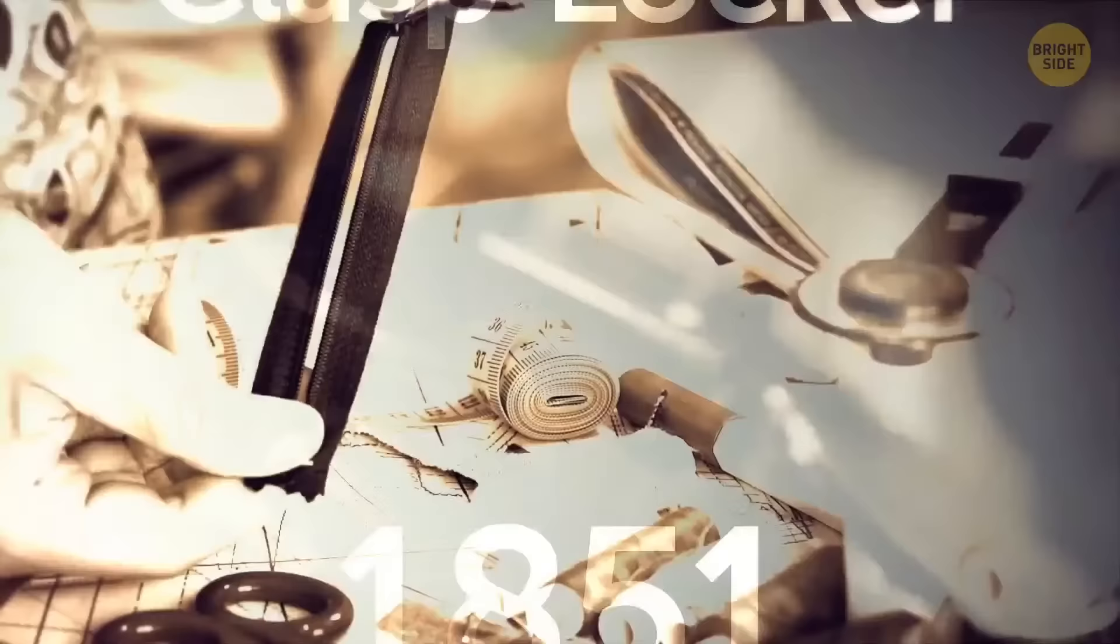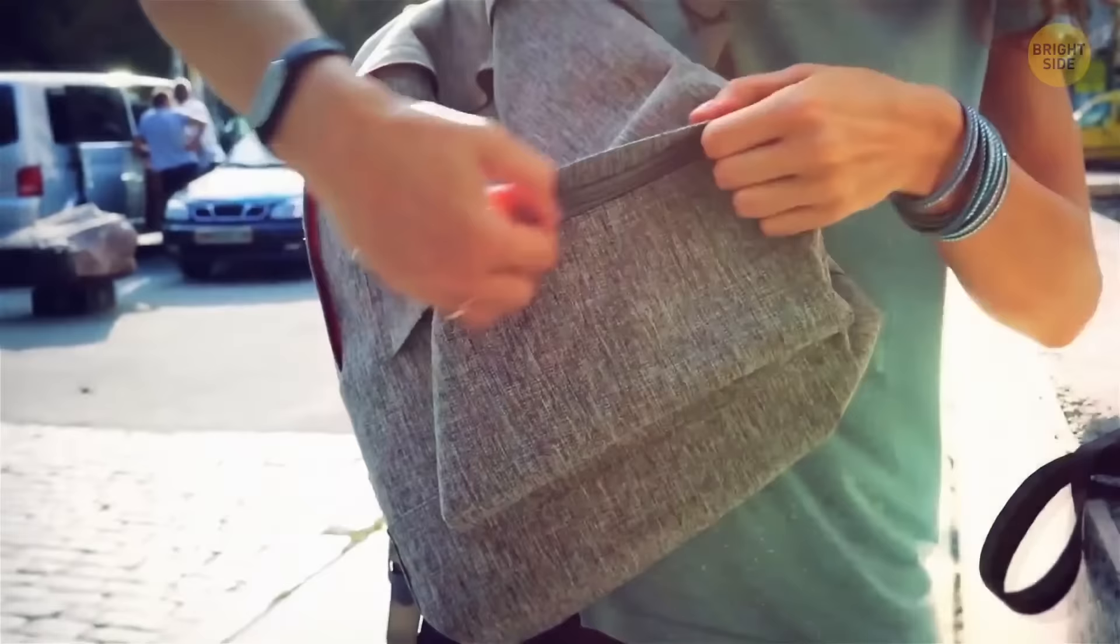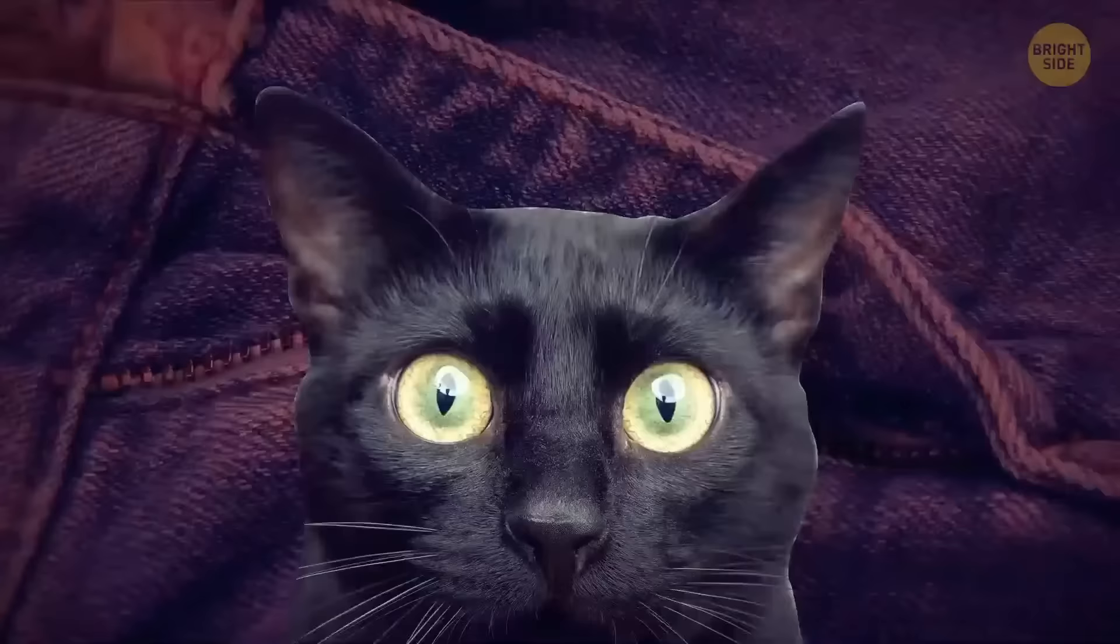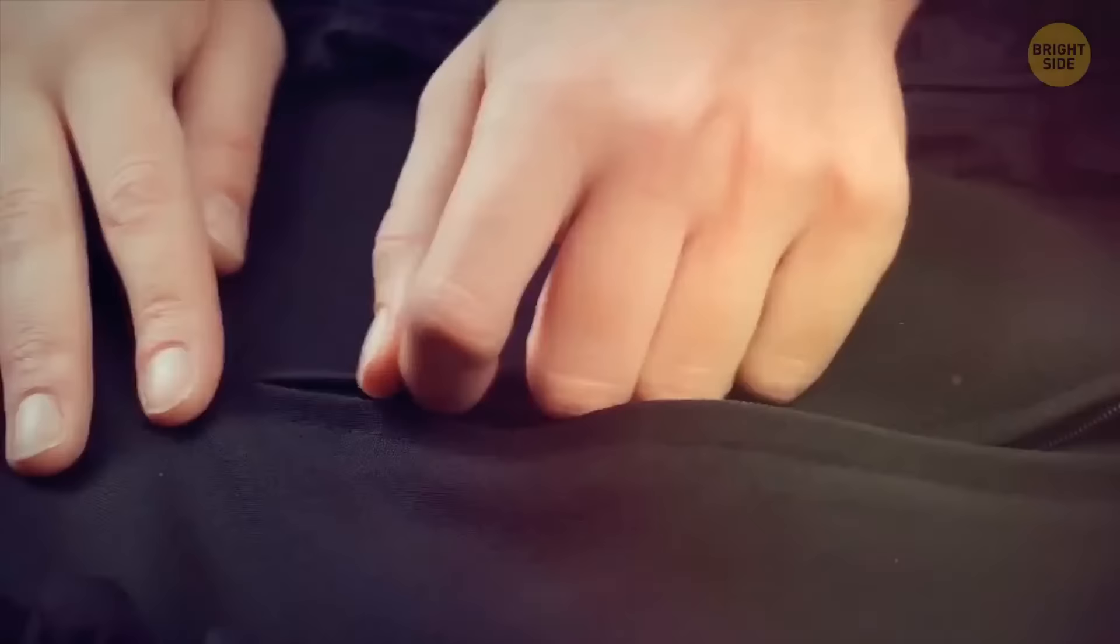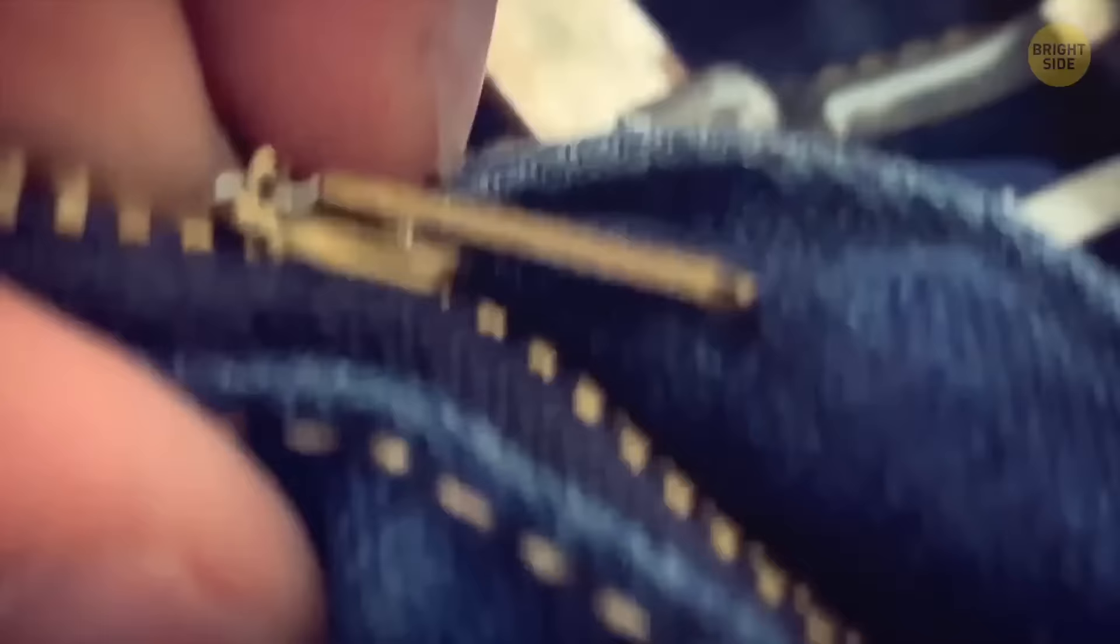When you do finally stumble out of bed, make sure you're using this next item correctly to avoid a potentially upsetting situation. The zipper, originally patented as the clasp locker in 1851, didn't become widely used until the 1930s. Now they're on everything, from bags to jackets to jeans. And they're not perfect. They get stuck. They pinch the skin. And we all know what happens if the zipper on our pants refuses to stay up. Well, luckily, this can be avoided. Most zippers have a locking mechanism built right in. When the zip is facing down and flat against the teeth, the lock is engaged and the zipper remains closed.